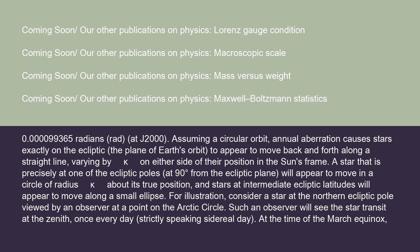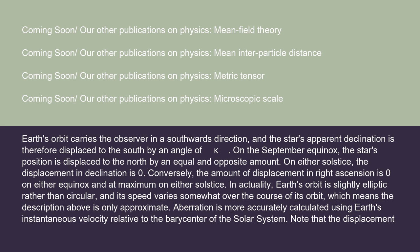For illustration, consider a star at the northern ecliptic pole viewed by an observer at a point on the Arctic Circle. Such an observer will see the star transit at the zenith once every sidereal day. At the time of the March equinox, Earth's orbit carries the observer in a southwards direction, and the star's apparent declination is therefore displaced to the south by an angle of kappa. On the September equinox, the star's position is displaced to the north by an equal and opposite amount. On either solstice, the displacement in declination is zero, while the amount of displacement in right ascension is zero on either equinox and at maximum on either solstice.